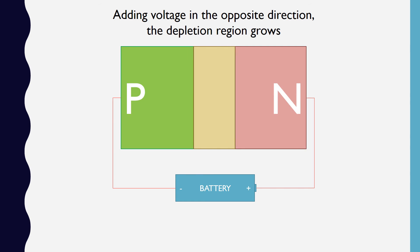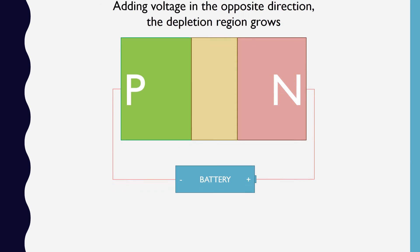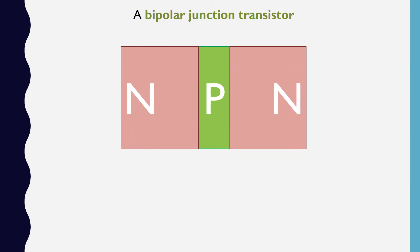Now we have all the information we need to understand transistors. A transistor is formed when a layer of n-type material is sandwiched between two layers of p-type material, or p-type material is sandwiched between n-type material. The results are PNP transistors and NPN transistors. Here, we'll only look at NPN transistors, as they're the most common in computers. The full name for this type of transistor is bipolar junction transistor.